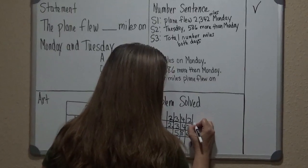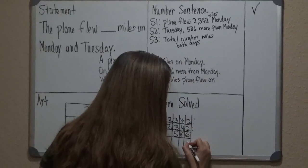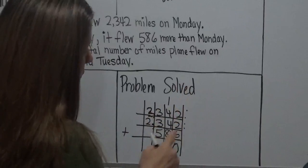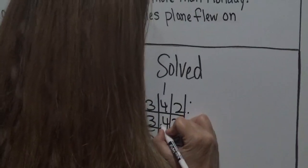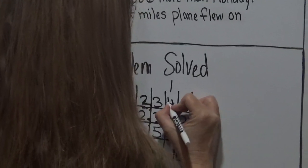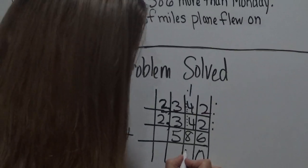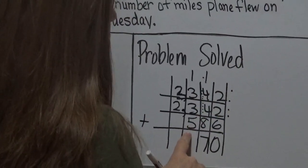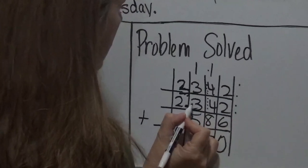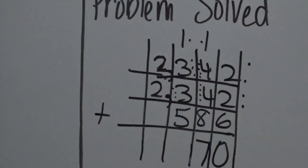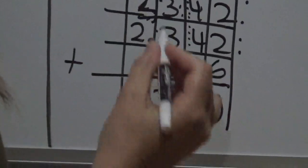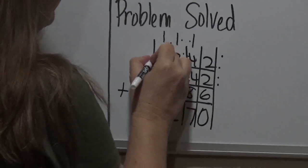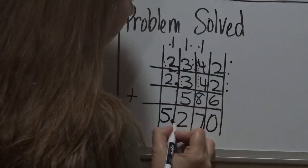Starting with the ones: 2 plus 6 gives me 10 ones, so I write zero and carry 1 ten. In the tens place: 4 tens plus 8 tens plus the carried 1 gives me 17 tens — bring down 7 and carry 1 hundred. In the hundreds: 3 hundreds plus 5 hundreds plus 1 gives me 12 hundreds — bring down 2 and carry 1 thousand. In the thousands: 2 thousands plus the carried 1 gives me 3 thousands... so the total is 5,270.